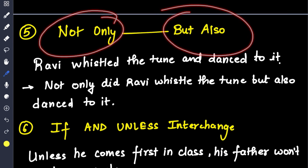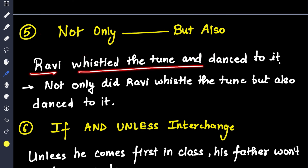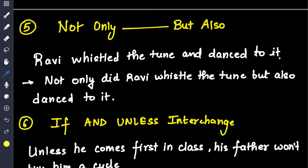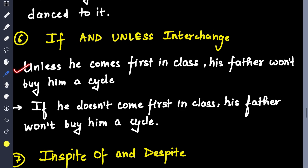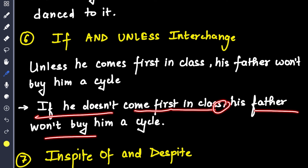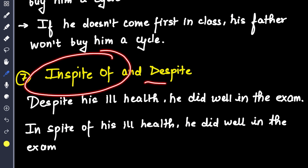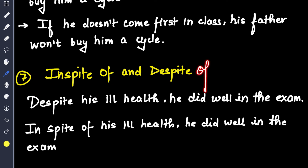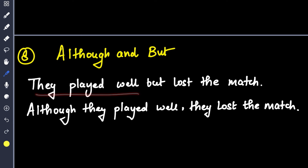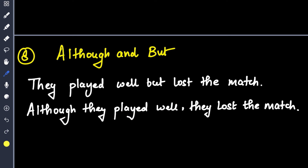'Not only but also' is the favorite question of the ICSE board. 'Ravi whistled the tune and danced to it' becomes 'Not only did Ravi whistle the tune but also danced to it.' Then interchange of if and unless: 'Unless he comes first in class, his father wouldn't buy him a bicycle' becomes 'If he doesn't come first in class, his father wouldn't buy him a bicycle.' Then in spite of and despite — I have seen students placing 'despite of,' which is completely incorrect. You write: 'Despite his ill health, he did well in the exam' or 'In spite of his ill health, he did well in the exam.' Although and but: 'They played well but lost the match' becomes 'Although they played well, they lost the match' — note the comma is inserted here.